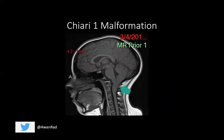With Chiari 1, this is typically when the cerebellar tonsils herniate through the foramen magnum. The foramen magnum can be drawn with an imaginary line between the basion, which is the anterior margin of the foramen magnum, and the opisthion, which is the posterior margin. If the cerebellar tonsils go past this line, you have a Chiari 1 malformation. If it's more than five millimeters below this imaginary line, you know you have a Chiari 1 malformation.